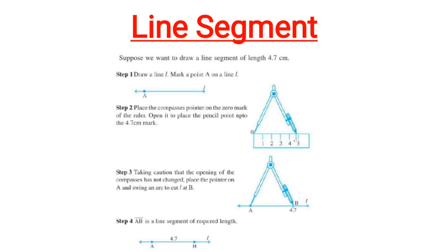First of all, draw a line L and mark a point A on the line L. Now place the compass pointer on the zero mark of the scale and open it to the place where the pencil point goes up to the 4.7 cm mark.